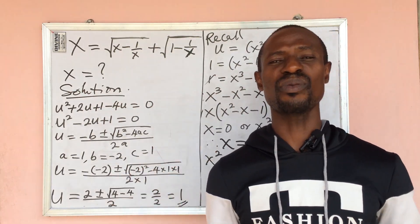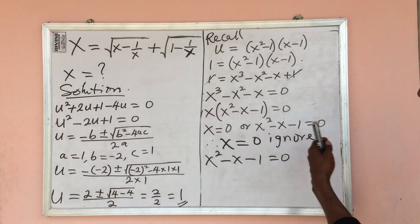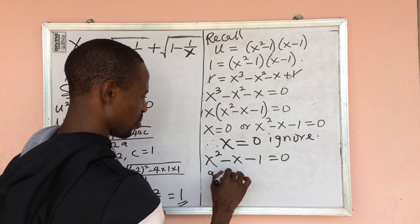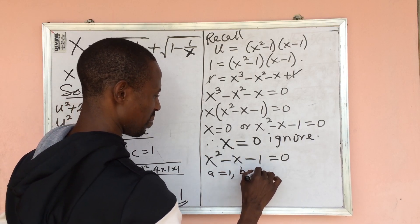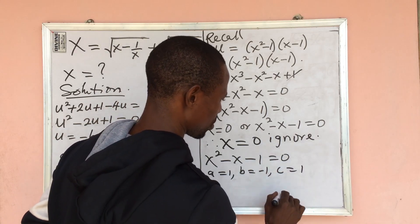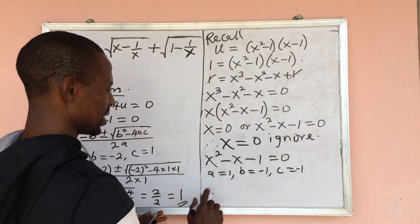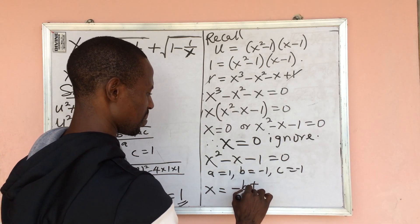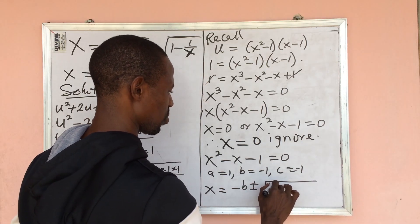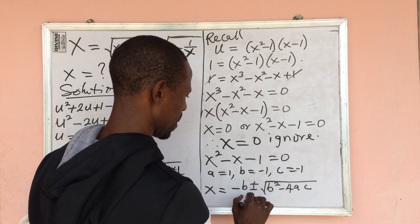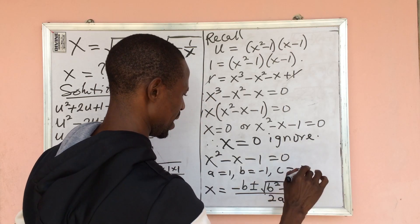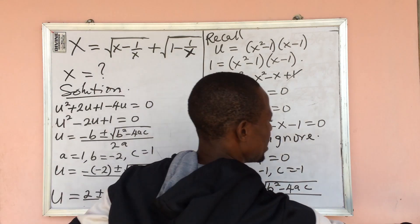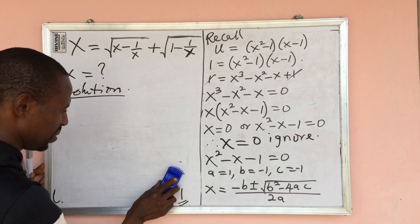We now solve x squared minus x minus 1 equals zero using the quadratic formula. Here a equals 1, b equals minus 1, and c equals minus 1. So x equals minus b plus or minus the square root of b squared minus 4ac, all over 2a.